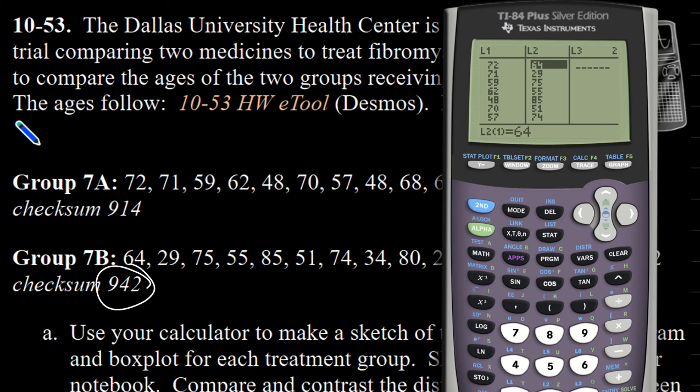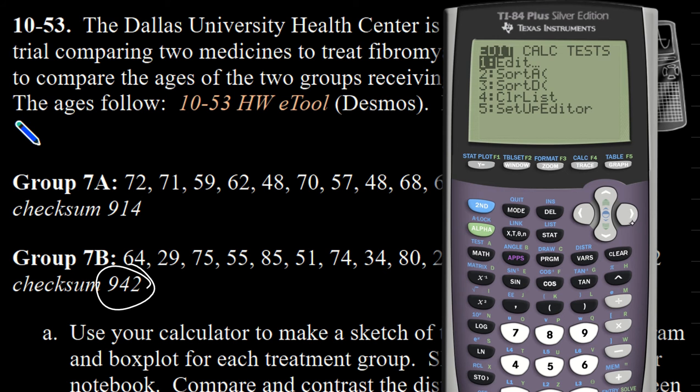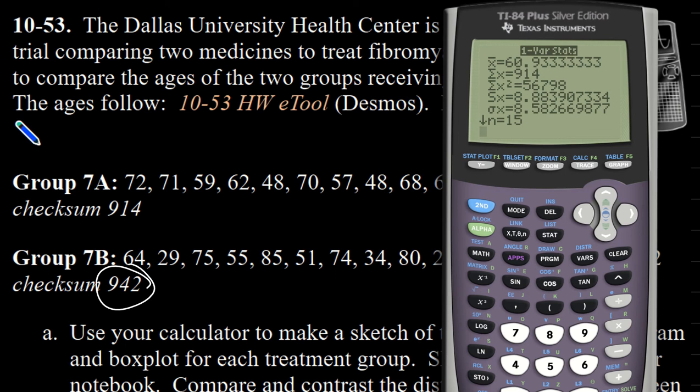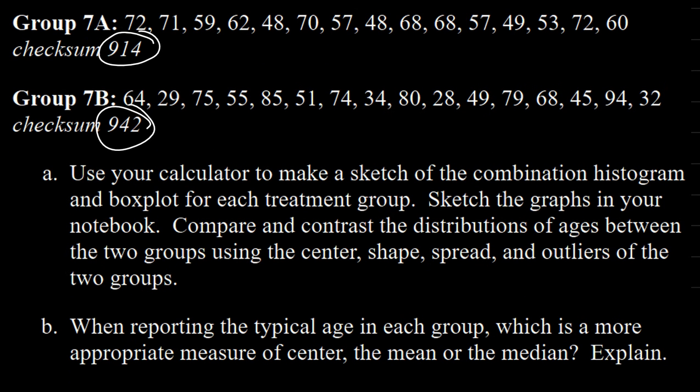Once your data is in, if you press stats and go over to calculate and look at one variable statistics for list one, you can see that I get a checksum. It says the checksum is 914, which shows up right here as the sum of the data. So it's possible I could have made a couple errors that canceled each other out, but I think it's unlikely, so I'm feeling pretty confident that I correctly entered the data.